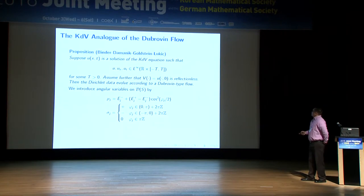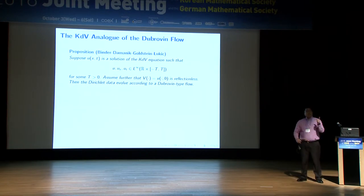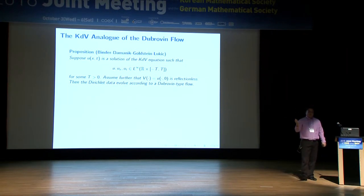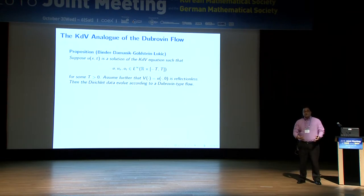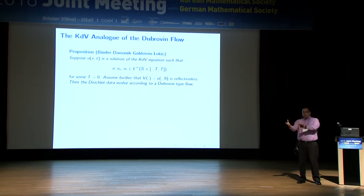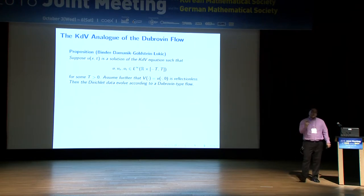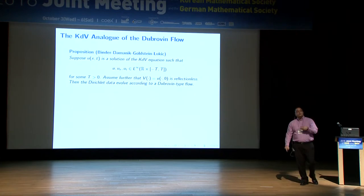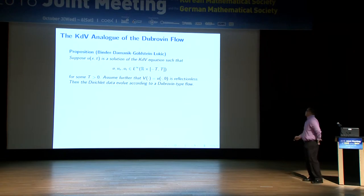The homogeneity assumption is important for the map B to be a homeomorphism — crucial for going back and forth between reflectionless functions and torus elements. The other assumptions we impose are necessary to ensure that these Dubrovin-type equations have solutions, which is why we do this: we want to show the KDV equation has a solution. We push it over to the torus, show a solution exists there, then pull it back. The other assumptions are read off from the equations and are exactly what the unspecified conditions in our first theorem are.